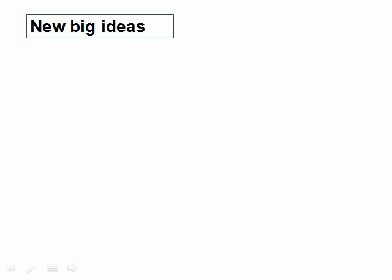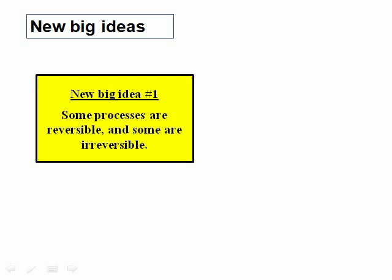In this new lecture, we have some new big ideas. The first one is that some processes are reversible and some are irreversible. How do we tell the difference? That's big idea number two: there exists a state function S that distinguishes between reversible and irreversible processes. That state function is called the entropy.